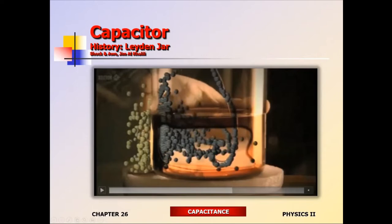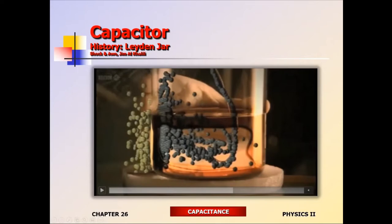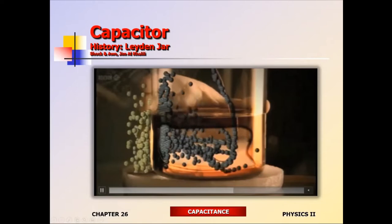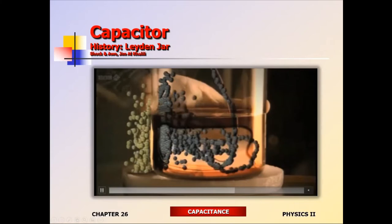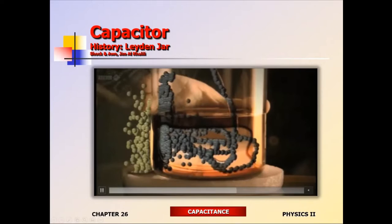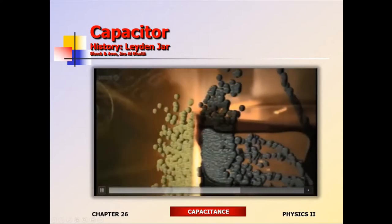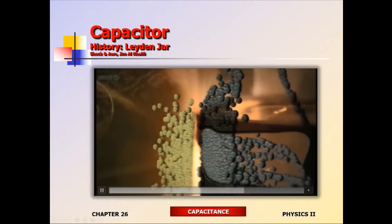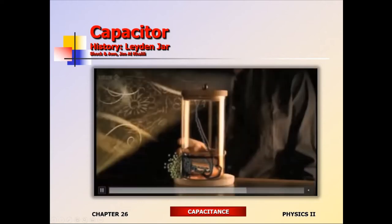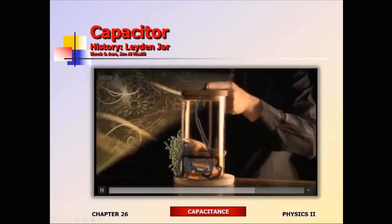Inside is going to be negative charge; outside is going to be positive charge — equal numbers of positive and negative. There's a gap filled with glass, which is an insulator, so the charges can't jump through. This becomes a charge storage device — it's able to hold charge. You can discharge it by completing the circuit through touching it, and the charge will go through your body — you'll get yourself shocked. These devices are known as capacitors.